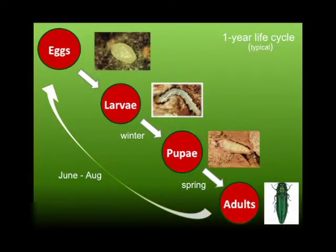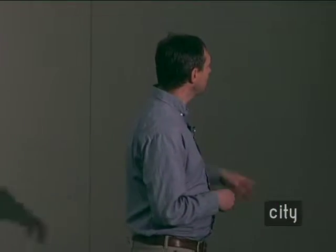Emerald ash borer is a beetle, so it goes through complete metamorphosis from eggs all the way to adults. The adults — the shiny green ones that fly around — are present any time between June and August here in Iowa. If you think you saw one in October or any time after August, it's probably not emerald ash borer. Keep in mind the beetle will be flying around anywhere between June and August.